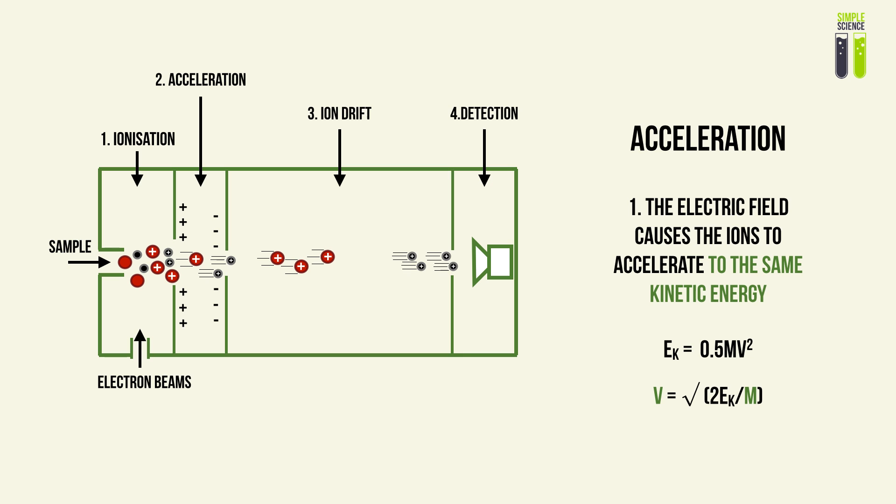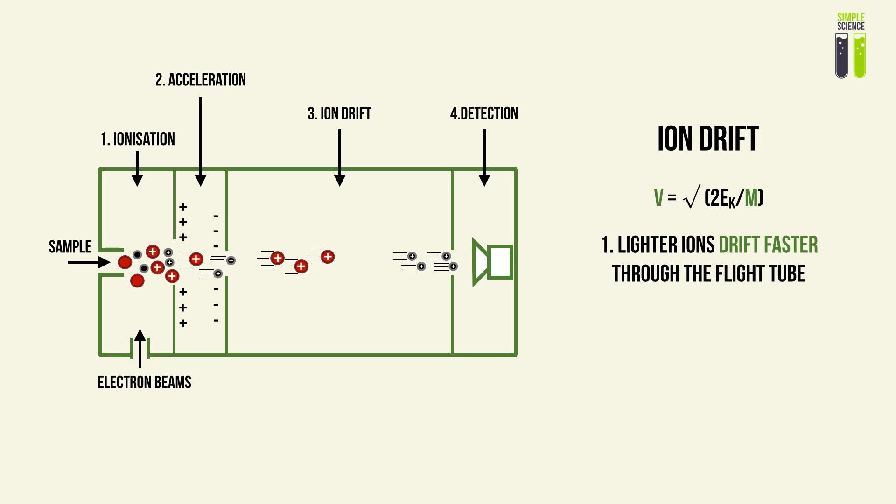The next step is to have it drift through this region called the flight tube, which is a long tube where you can measure the time. We must understand that lighter ions will drift faster. If you look at the equation v = √(2E_k/m), we see that lower mass results in higher speed, and heavier mass results in lower speed. Different ions will have different masses and therefore different drift speeds and flight times, and they can therefore be detected separately. Detection must be quite accurate.